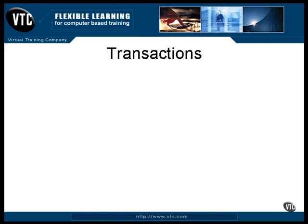A transaction is a collection of separate operations that go together to perform one larger operation. For example, you may want to sell an item by reducing the count of the available inventory, adding it to a shipping list, issuing a bill to a customer, and possibly a few other things here and there. All of these operations go together to make one transaction.